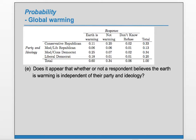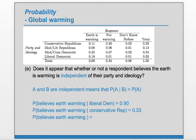Part E: does it appear that whether or not a respondent believes the Earth is warming is independent of their party and ideology? Independence means knowing information about one does not affect the probability of the other. We saw that P(Earth warming | Liberal Democrat) = 0.9, and P(Earth warming | Conservative Republican) = 0.33. Since knowing the party changes the probability, they are not independent. The unconditional probability of believing the Earth is warming is 0.6, which is not equal to either conditional value, confirming dependence.